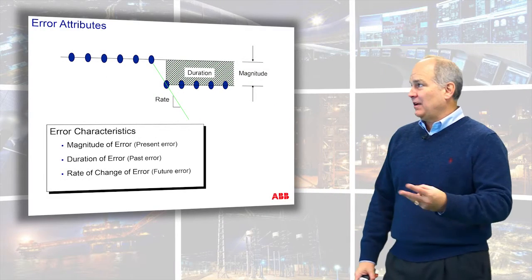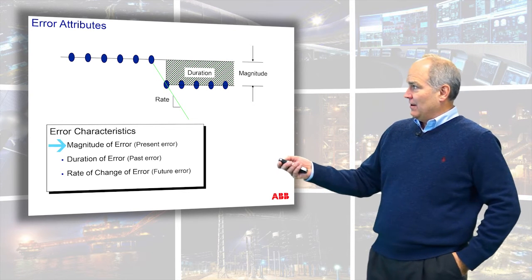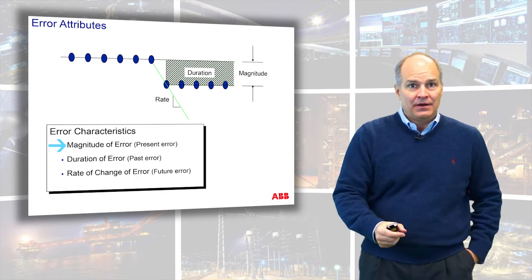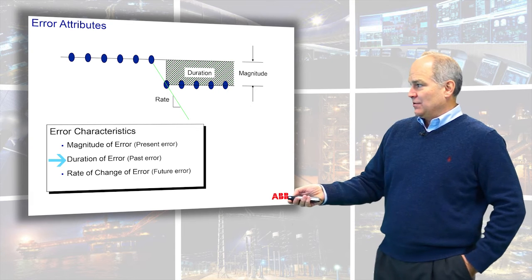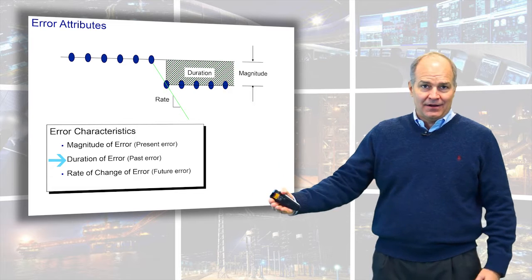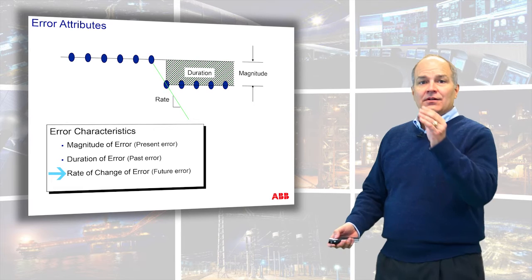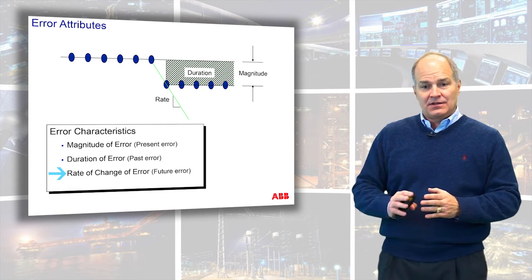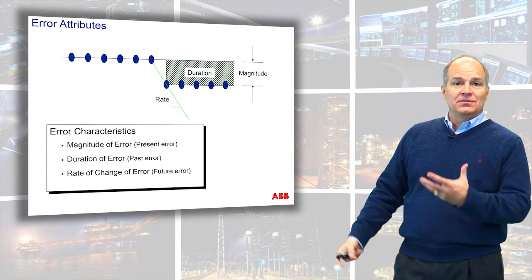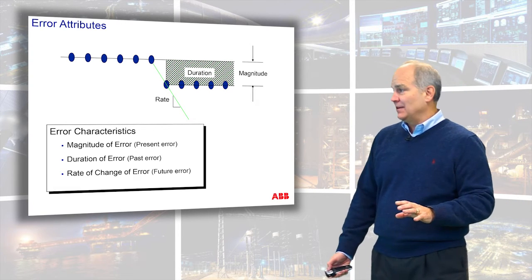So those are really the three attributes that define what we're looking at: the magnitude of the error, which defines the present error — the now error, what's going on right now. Then we have the duration of the error, which gives us an insight into the history or past error. And then rate of change is an indicator of the future — where is this error going? Those are the three attributes of any measurement or control system, and we're going to play off of that throughout the remainder of this talk.